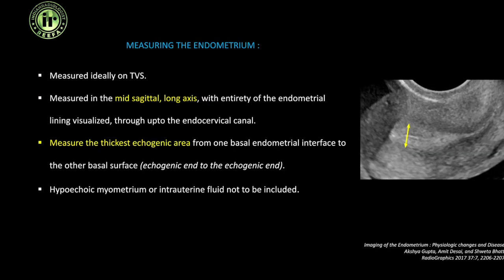How do we measure the endometrium? The ideal technique is a transvaginal scan, but for patients in whom we cannot do that, we can proceed with a transabdominal scan. Either way, the measurement is done in the mid-sagittal plane in the long axis, and the entire endometrial lining needs to be visualized right up to the endocervical canal. We measure the thickest echogenic area — from one basal interface to the other basal interface at the widest part.